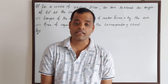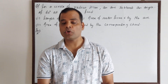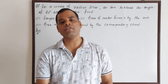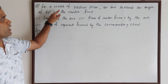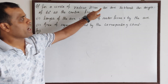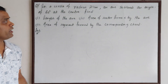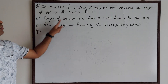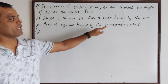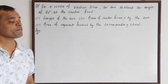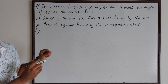Hello all. Today we will discuss a different pattern of question based on the chapter area related to circles. It is altogether a different question from what we discussed in earlier videos. The question is: in a circle of radius 21 cm, an arc subtends an angle of 60 degrees at the center. We have to find the length of the arc, area of the sector formed by the arc, and area of the segment formed by the corresponding chord. The question seems a little confusing, but we will solve it step by step.